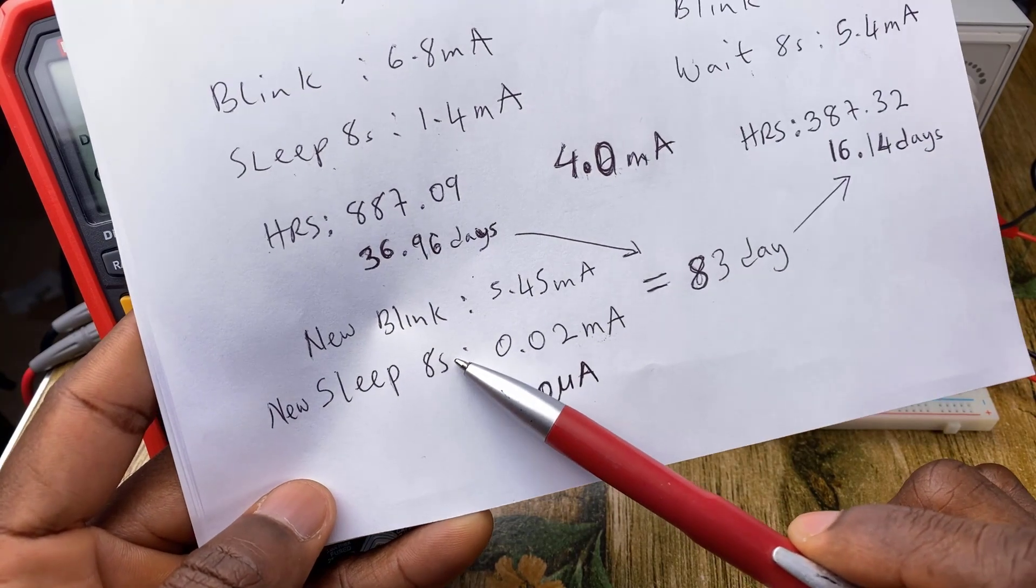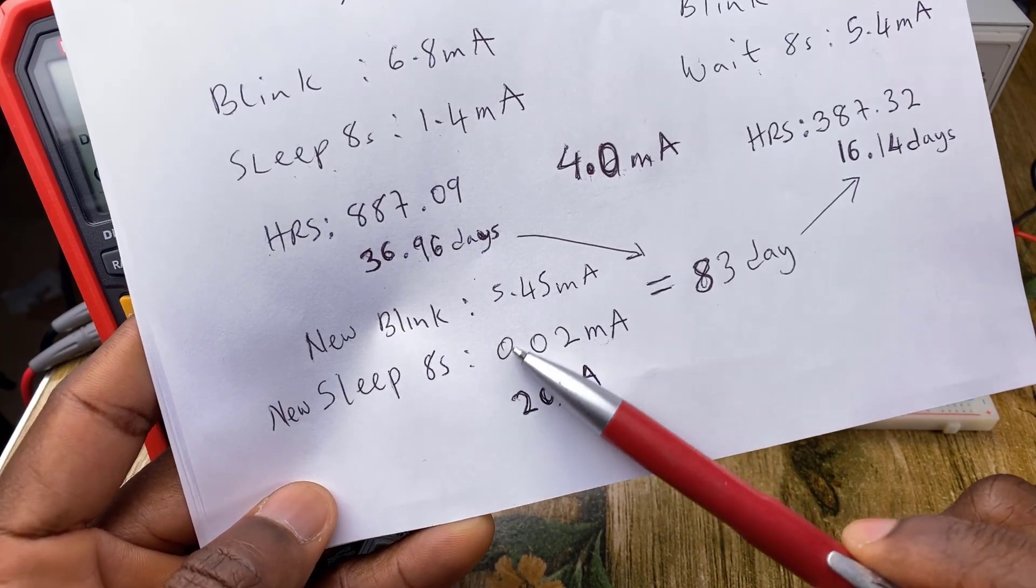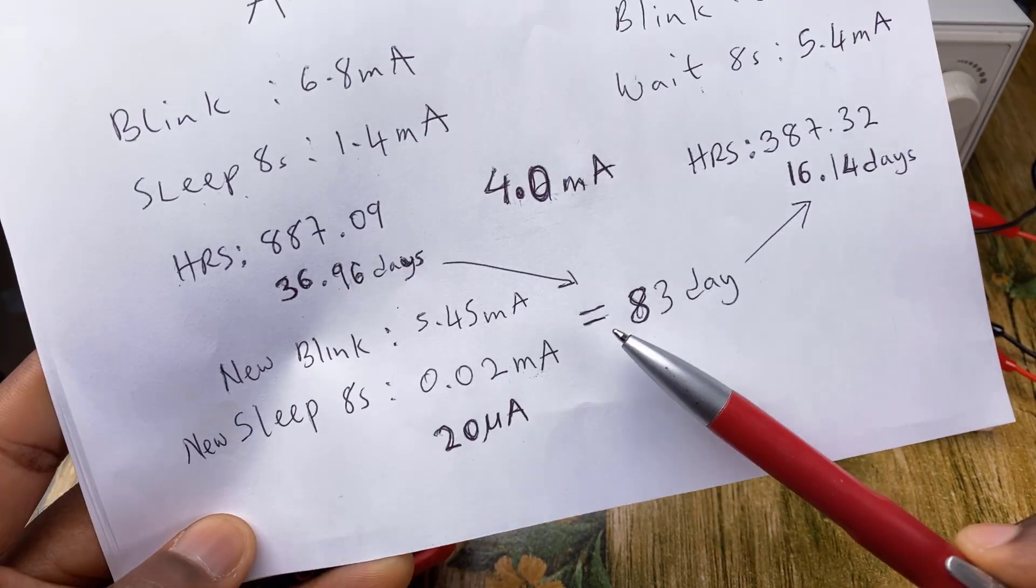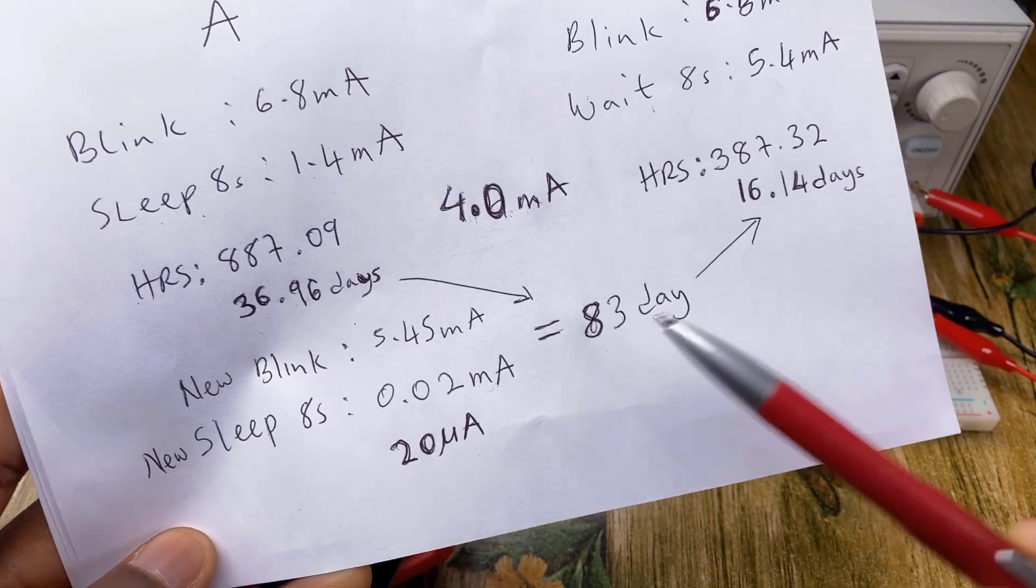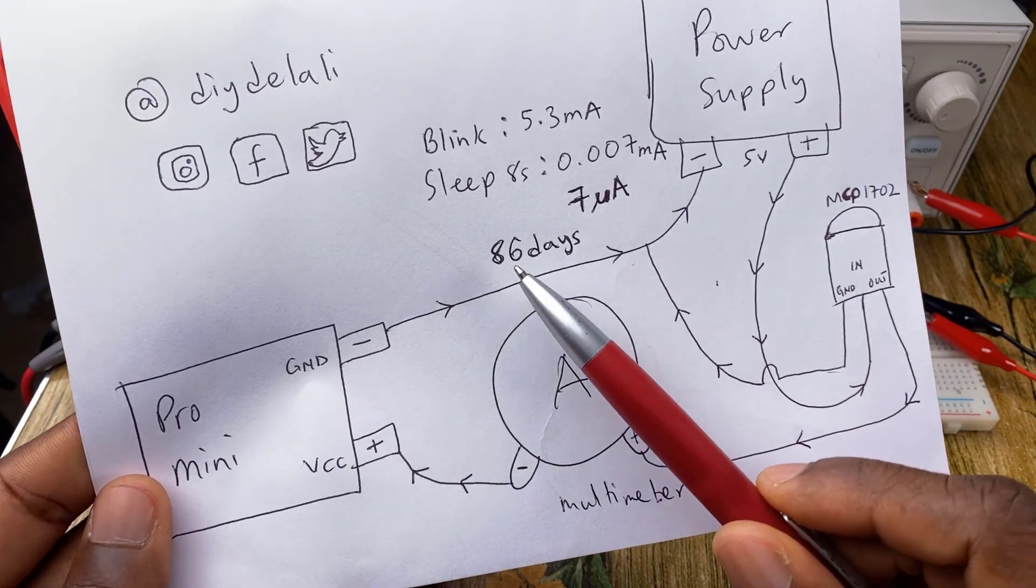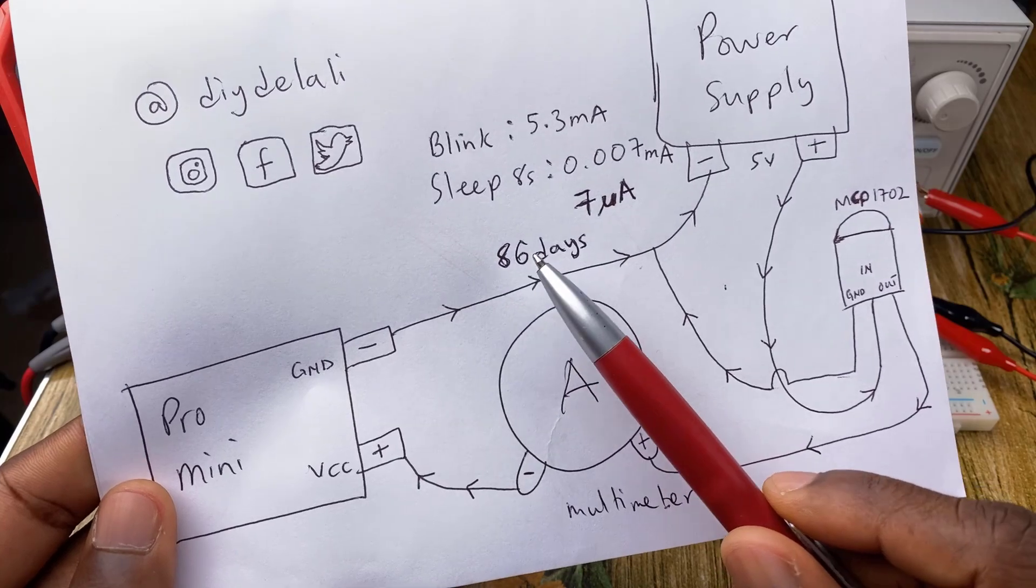Also, by removing the onboard LED, we were able to further reduce the sleep current consumption to 20 microamps, which increased our operation time to 83 days. And by swapping out the original regulator, we were able to extend that 83-day duration to 86.